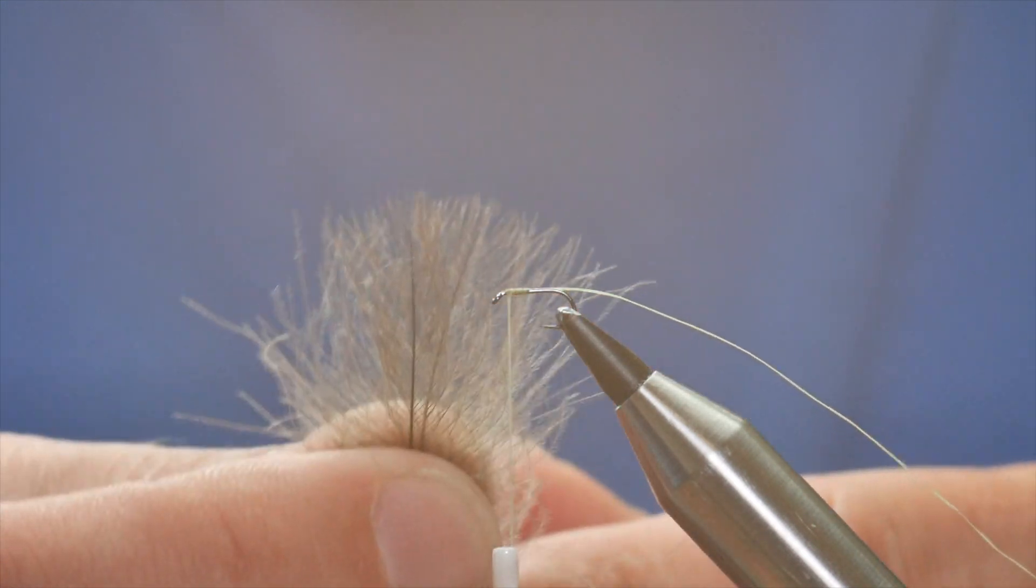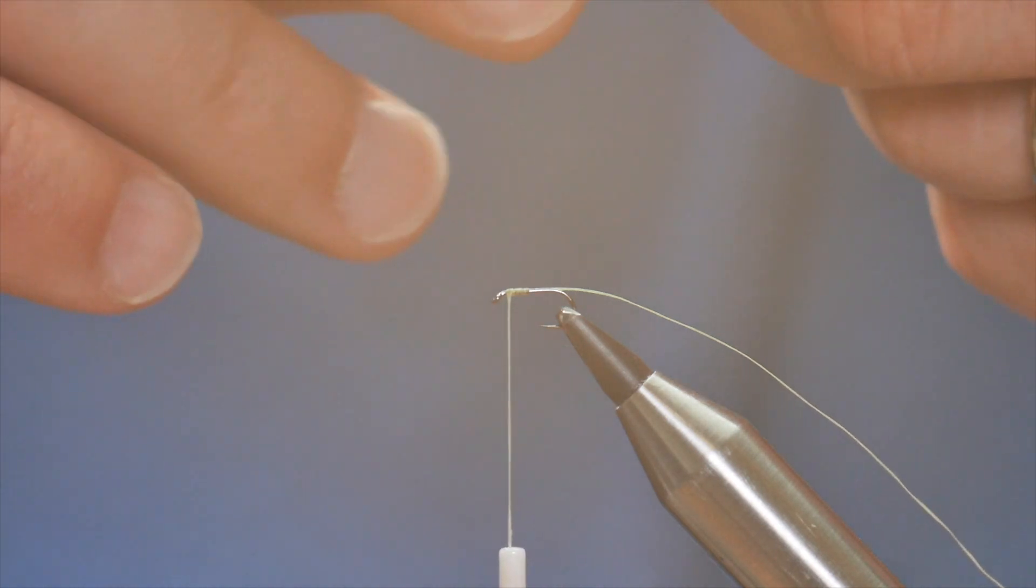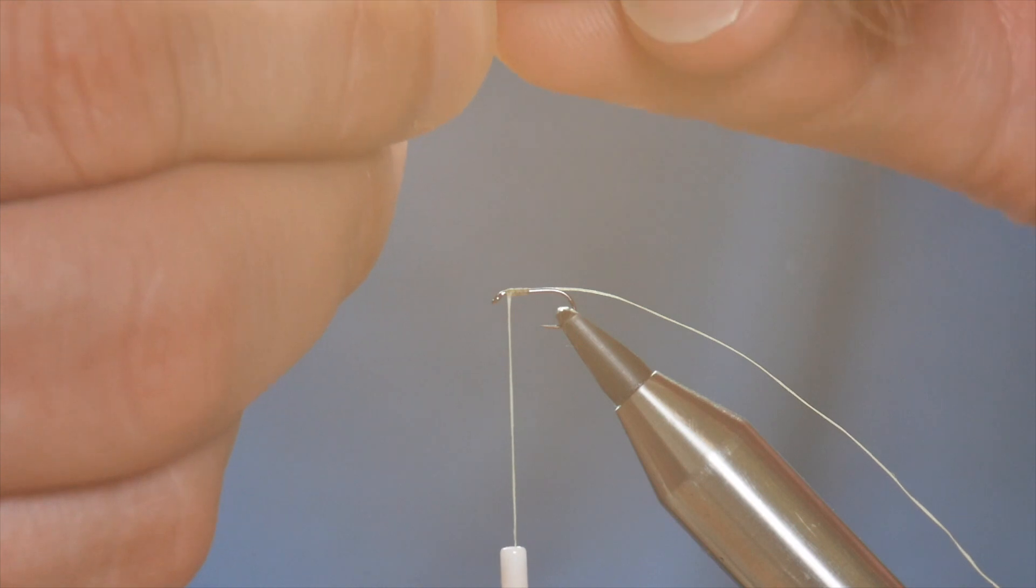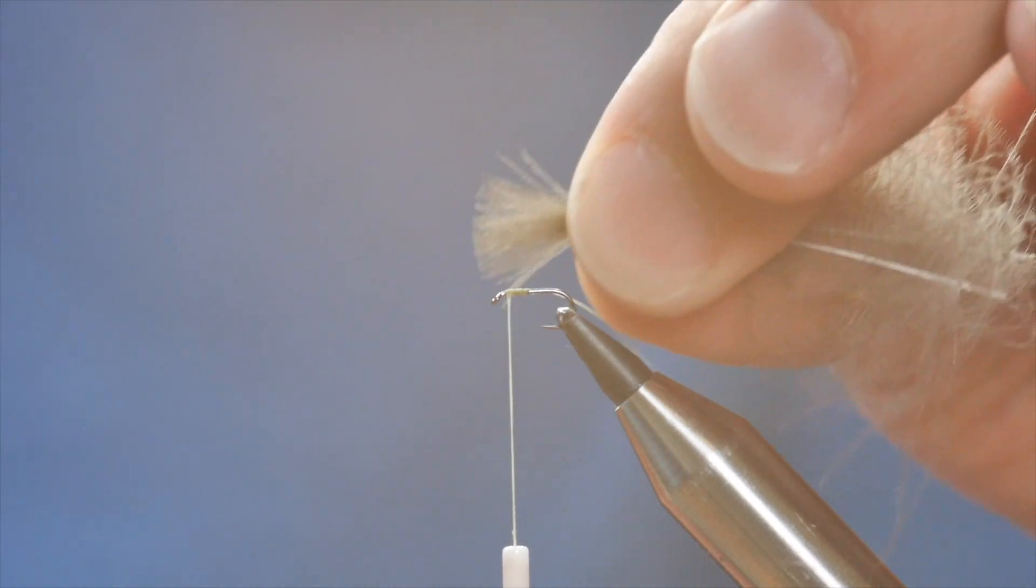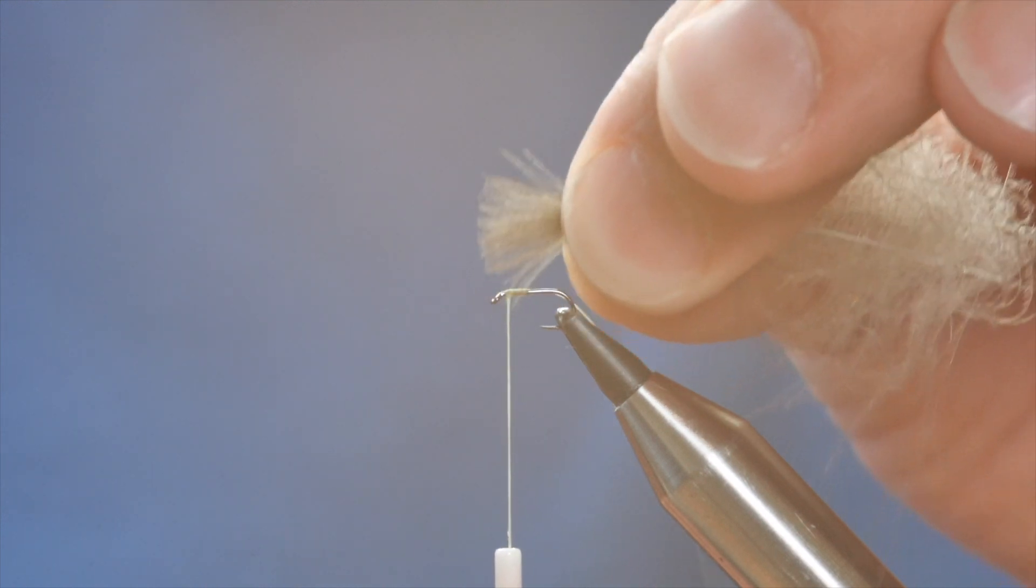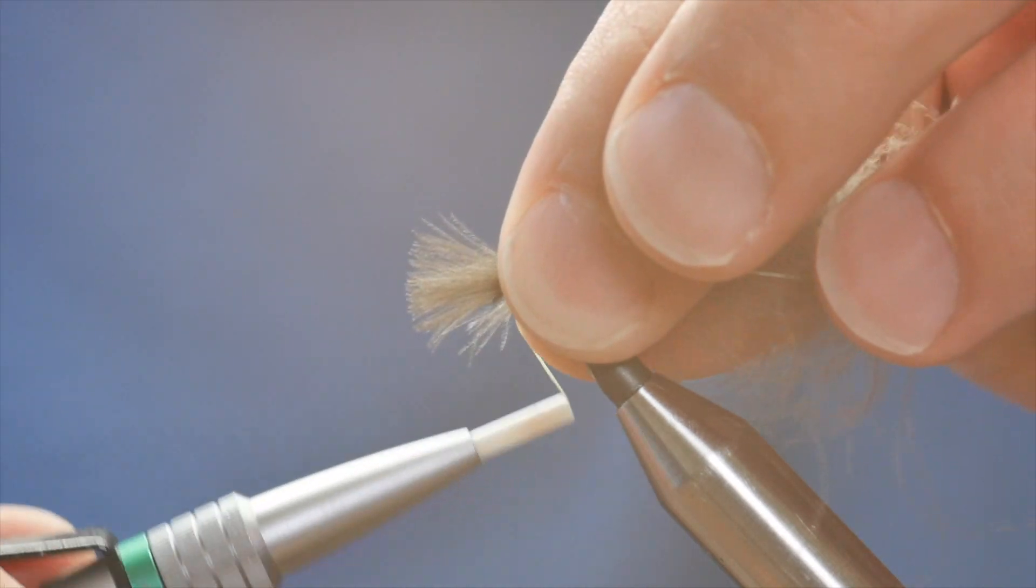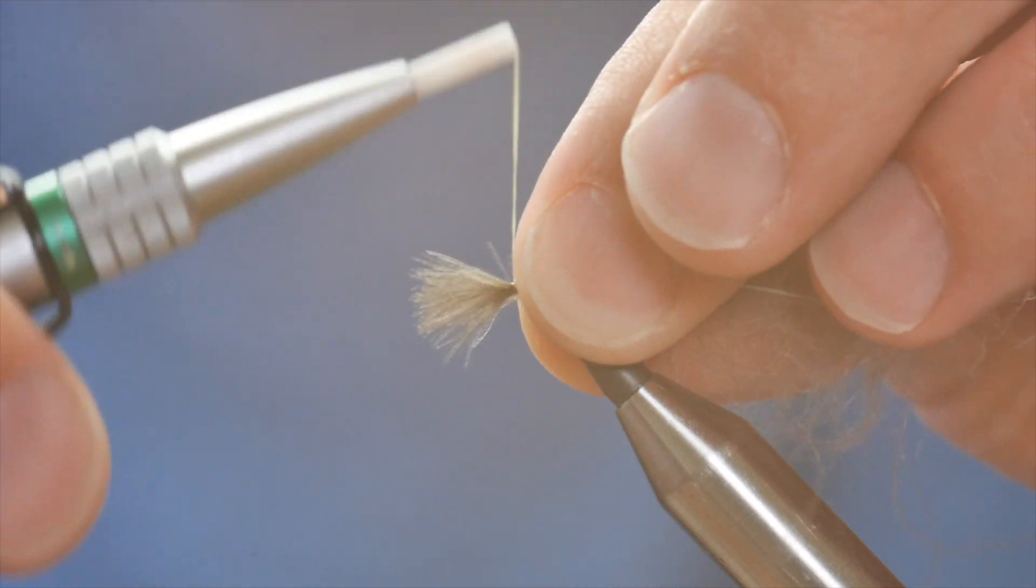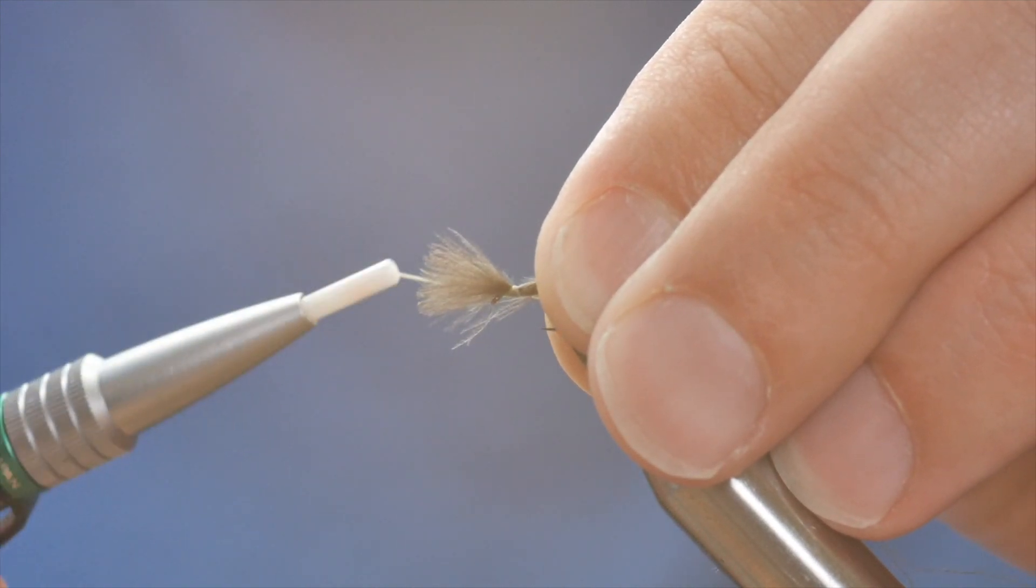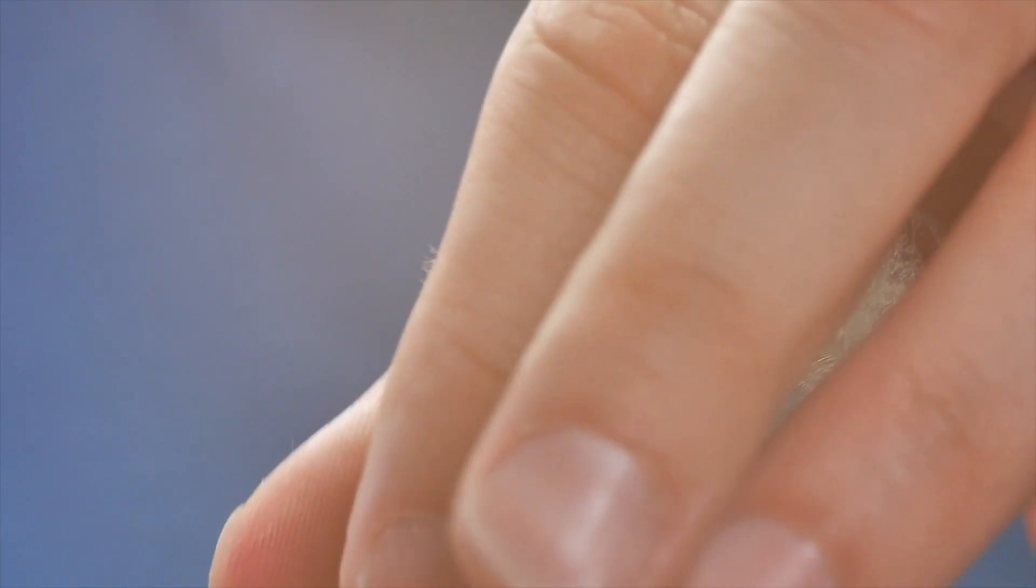Now I want to use the tips, I want to marry them up as best I can. Bring everything as close to the edge as you can. Now lengthwise, I don't want it to be any longer than the body of the fly really. So I'm going to catch that in with a pinching loop and then just gently ease it back to where I want it.